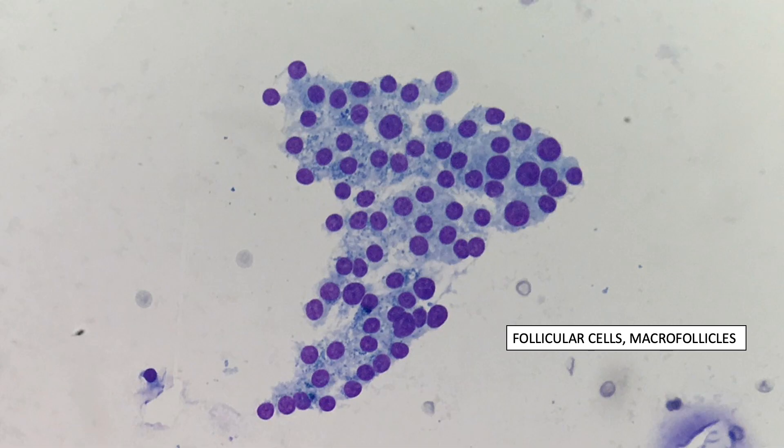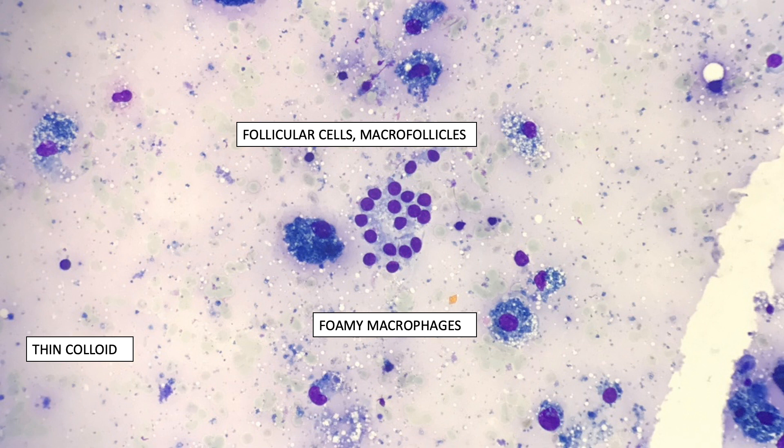Here in the Diff-Quik stain we can see the micro follicles and a slight granularity of the cytoplasm of those cells, which is very common in these benign elements.